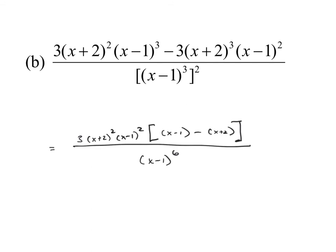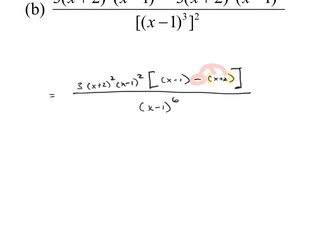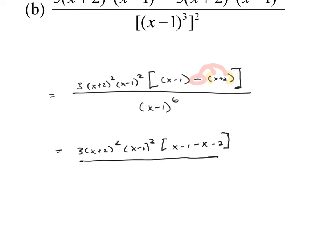I want to highlight something very important: notice the parentheses around x plus 2 in that last part. One of the biggest mistakes in calculus is distributing the negative incorrectly. When you have subtraction of multiple terms, you must distribute that subtraction to both terms. So within the brackets: x minus 1, then distributing the negative gives minus x minus 2. Many students write minus x plus 2, but it's actually minus x minus 2. Combining like terms: x minus x is 0, and negative 1 minus 2 is negative 3. That entire inside simplifies to negative 3.